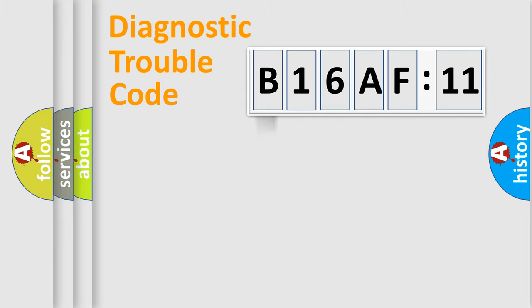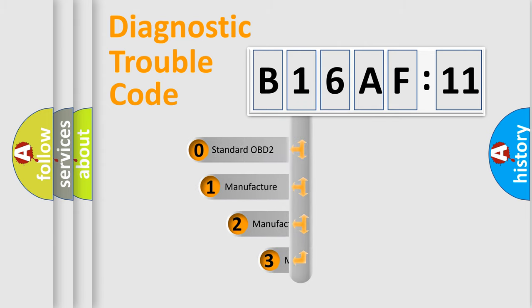Powertrain, body, chassis, and network. This distribution is defined in the first character code.